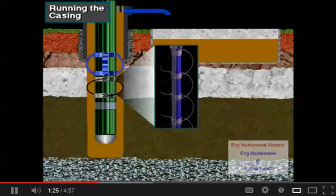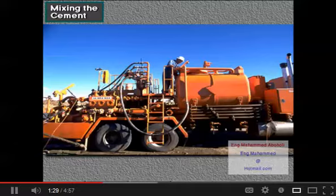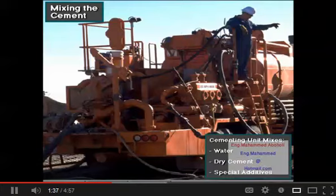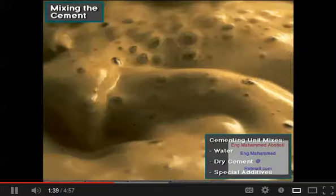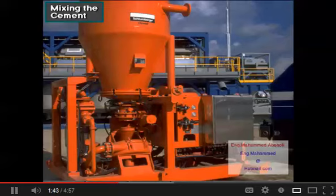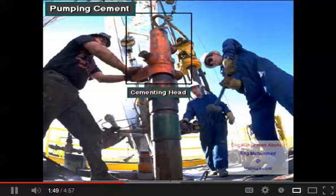The cementing crew next readies a cementing unit. The cementing unit rapidly mixes water, dry cement, and special additives to make a liquid cement slurry. A high-pressure cement pumping unit moves the slurry down the casing.